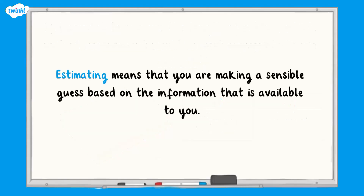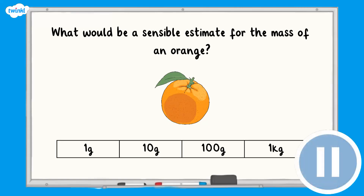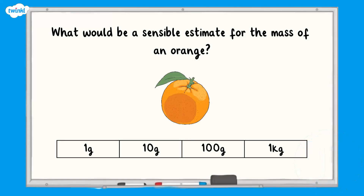Now let's look at estimating. Estimating can also be called approximating and means that you are making a sensible guess based on the information available to you. For example, what would be a sensible estimate for the mass of an orange? A sensible estimate for the mass of an orange would be 100 grams.